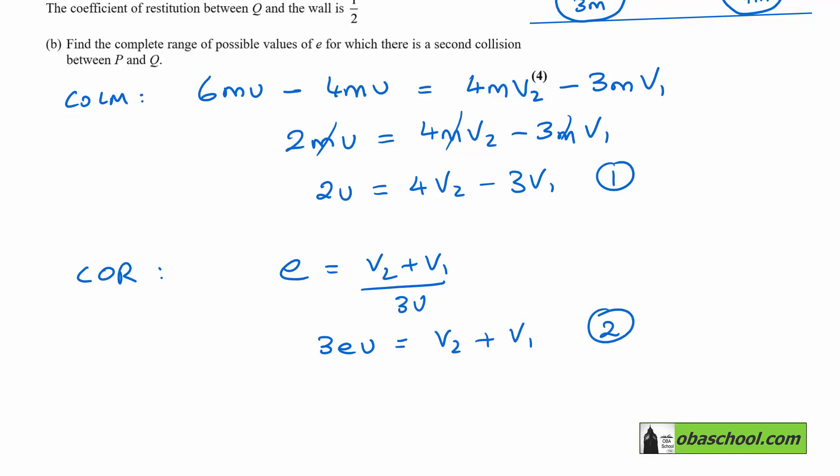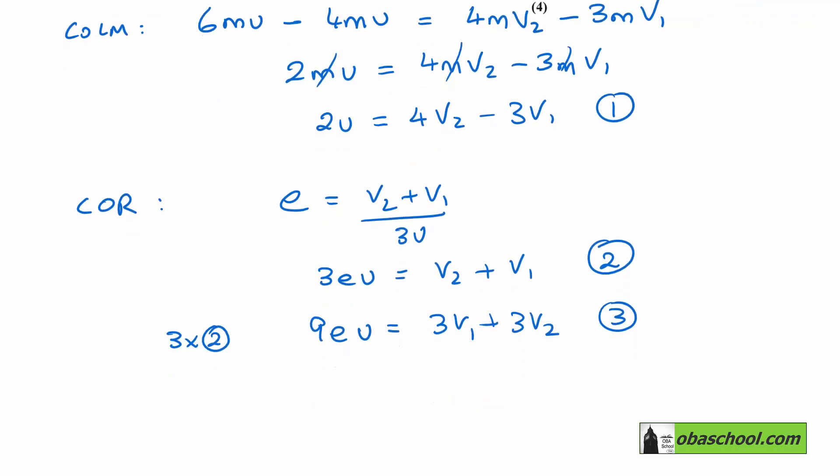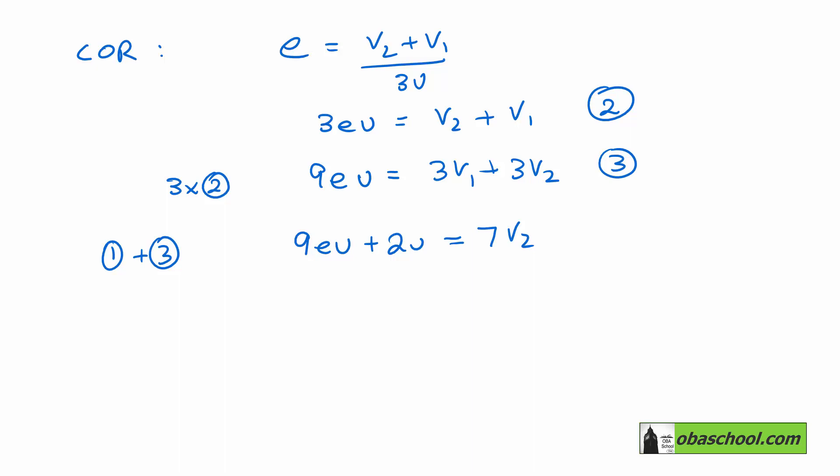So if we do 3 times equation 2, we get 9eu is equal to 3v1 plus 3v2. Let's call that one equation 3. And if I now add equation 1 and equation 3, I get 9eu plus 2u, the V1s will cancel out, and I get 7v2. And that gives me that V2 is equal to u over 7, 9e plus 2, as required.